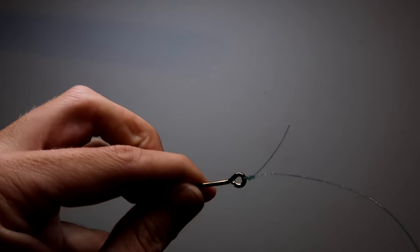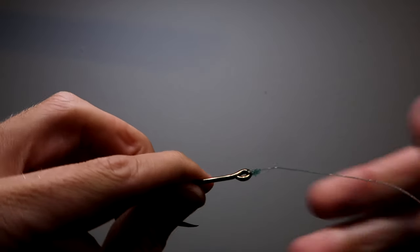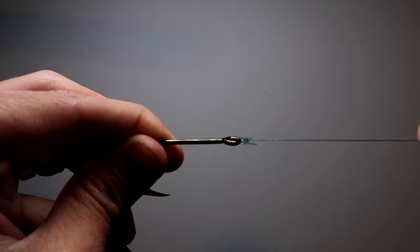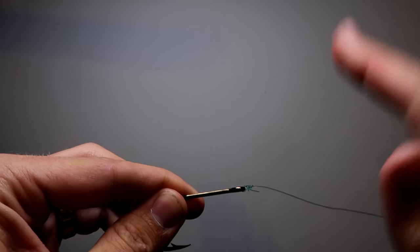And once you've tightened it down, just take your scissors, snippers, whatever, trim it right next to the end there, and you've got your improved clinch knot. This knot almost never fails. It is one of the best knots in all fishing. You can use it for anything.